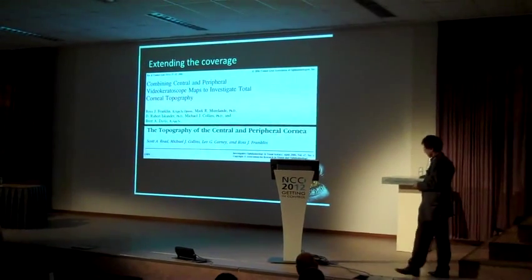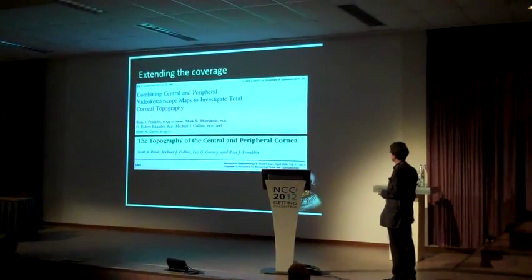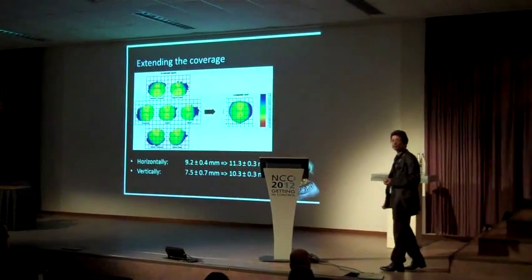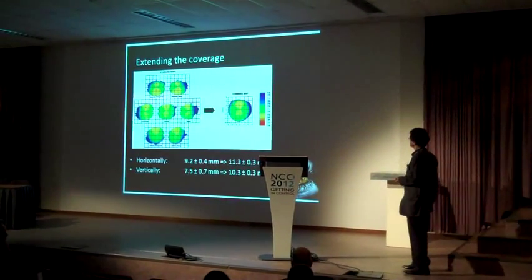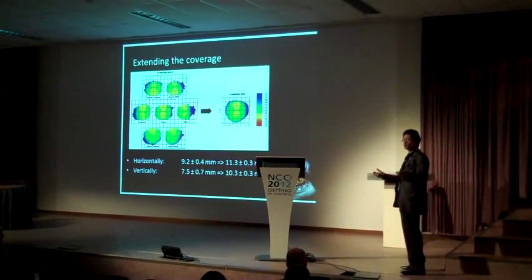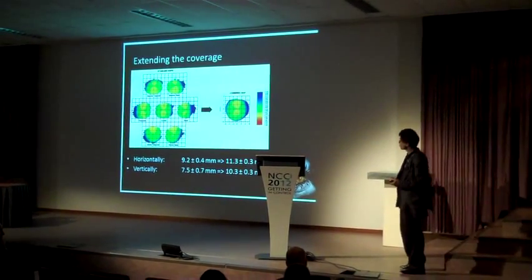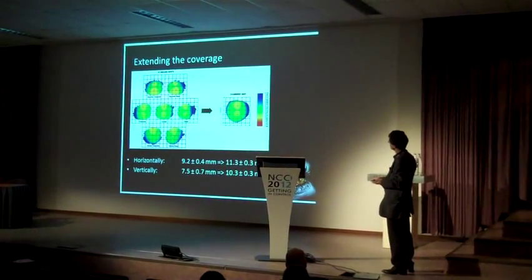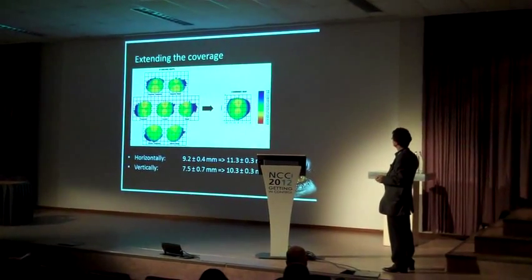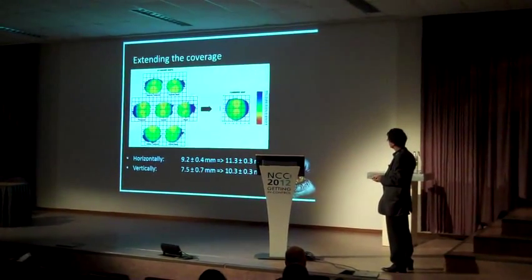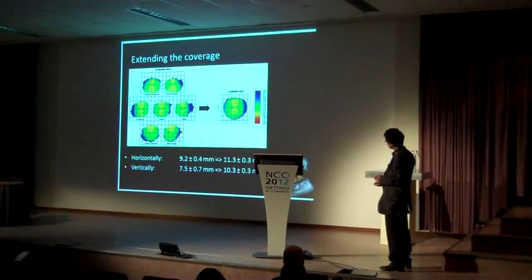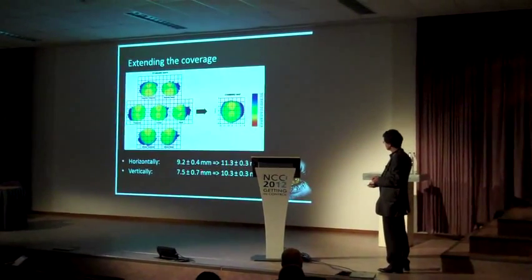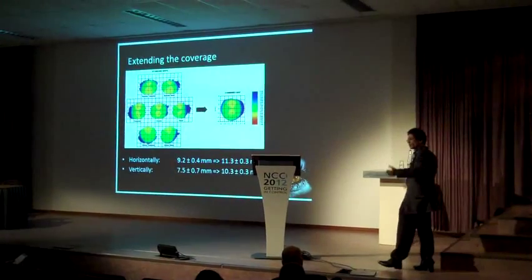If we use a videokeratoscope, how can we extend the coverage? One way we thought of is to take many pictures and try to stitch them together, as in some modern digital cameras — except we are not stitching 2D pictures, but three-dimensional structures in 3D, so it's a little more complicated. If you take, say, seven different images — your central cornea plus images looking up, left, right, and so on — on average we can extend horizontally from 9.2 to 11.3 mm, or vertically from 7.5 to 10.3 mm. Almost a decade ago, Dicon had that idea to include four additional targets, but they failed to commercialize it.